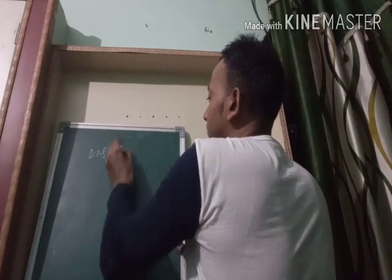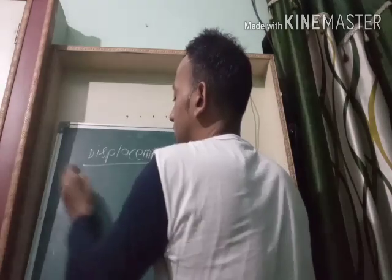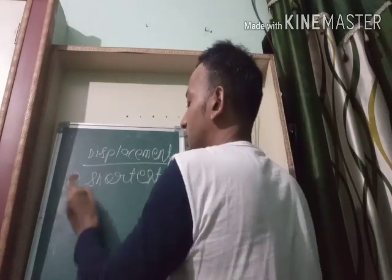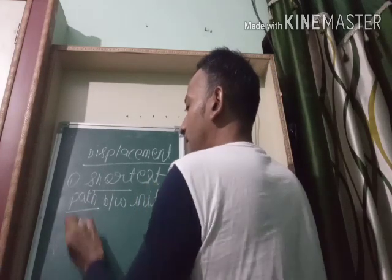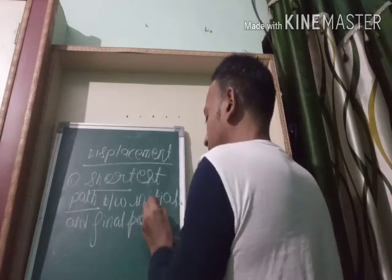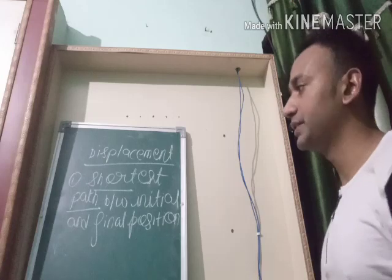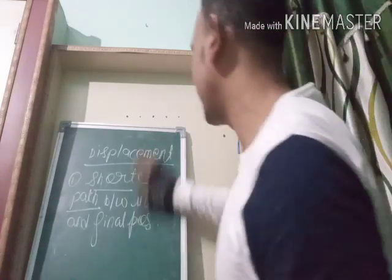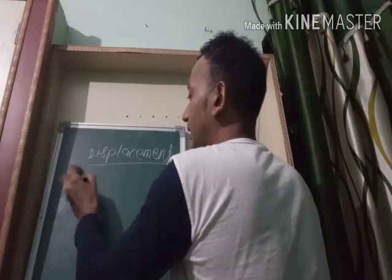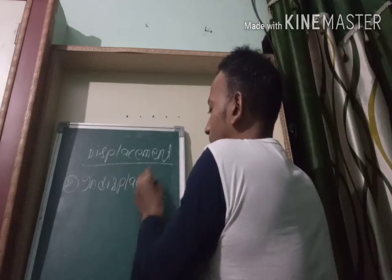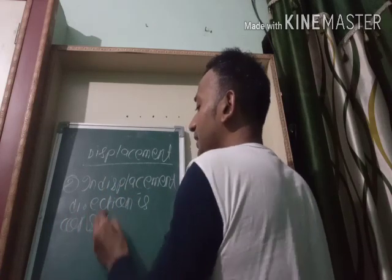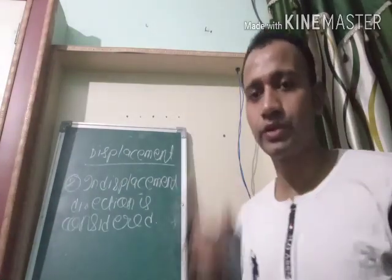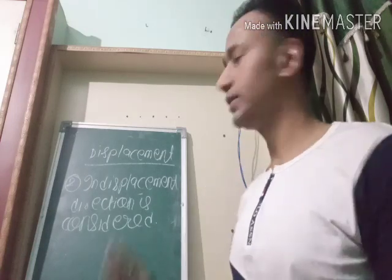Now I am writing two basic points for displacement. First point: displacement is the shortest path between the initial and final position. Second point: in displacement, direction is considered. You have to fix one direction — if you are moving towards the right, that direction is positive; if you are moving towards the left, that direction is negative.